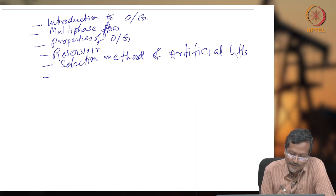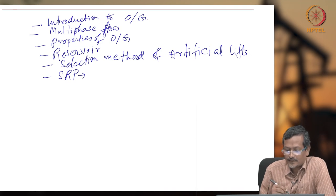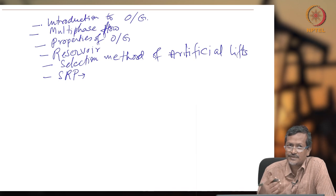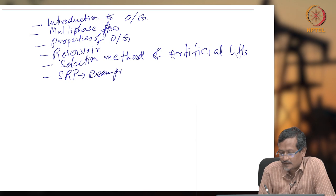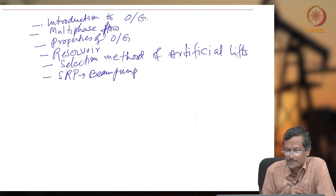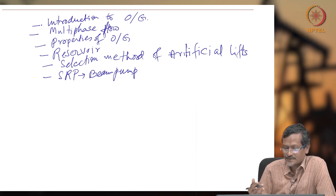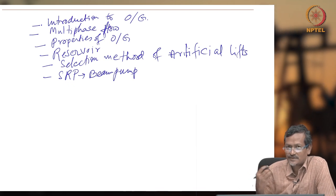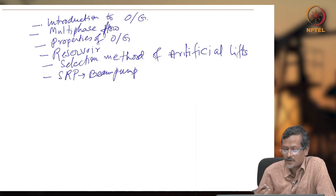After introducing the selection criteria, I will discuss the different artificial lift systems one by one. The first one will be the sucker rod pump or beam pump. Whenever students are searching for sucker rod pump, you should search using different terms such as beam pump, sucker rod pump, or other terms like nodding donkey or horse head. You have to use all these terms to get more information about sucker rod pump or beam pump.